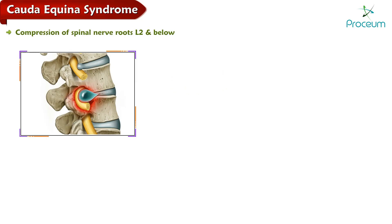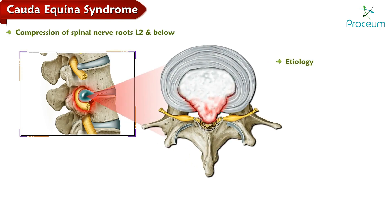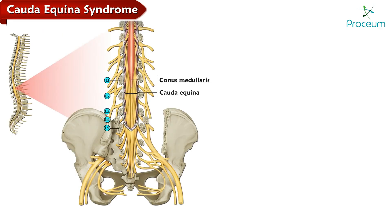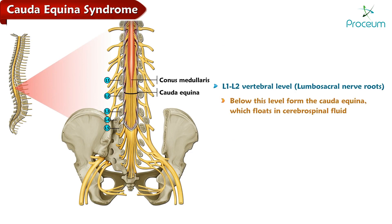Cauda equina syndrome occurs due to compression of spinal nerve roots L2 and below, and is caused by disc herniation or rupture, spinal stenosis, tumors, infection, hemorrhage, or iatrogenic injury. In adults, the spinal cord ends at the L1-L2 vertebral level, and the lumbosacral nerve roots below this level form the cauda equina, which floats in cerebrospinal fluid.